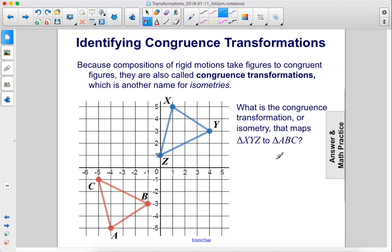Identifying congruence transformations. Because compositions of rigid motions take figures to congruent figures, they are also called congruence transformations, which is another name for isometries. What is the congruence transformation or isometry that maps triangle XYZ to triangle ABC?